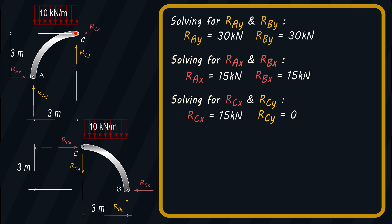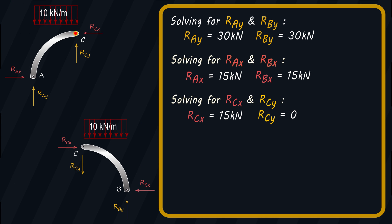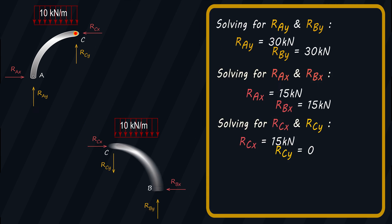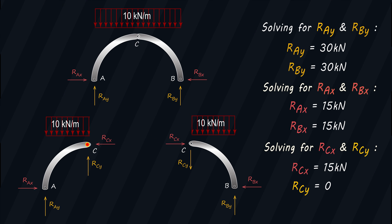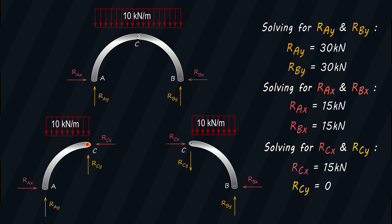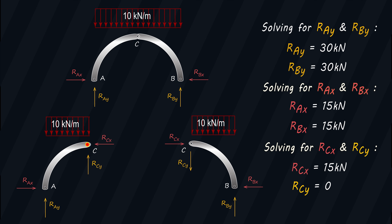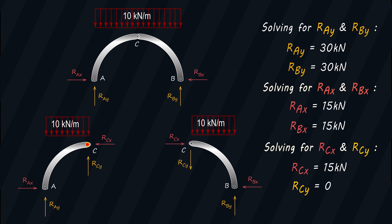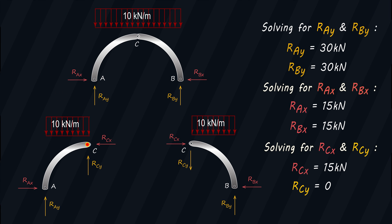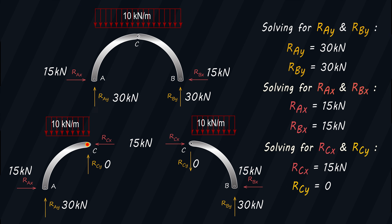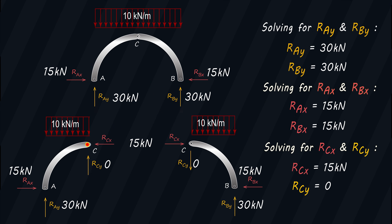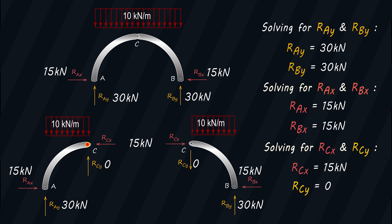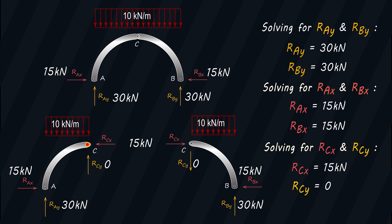So these are the reactions at the hinges of this 3-Hinge Arc. The last thing we need to do is to plug in these values into our free body diagram, and we'll have these as our final answer.